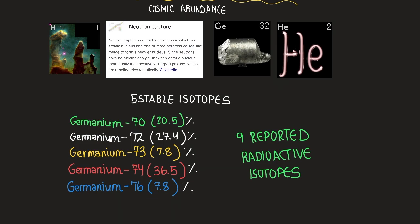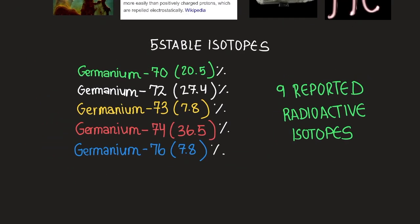The five stable isotopes of germanium occur in the following relative amounts. Germanium-70, 20.5%; germanium-72, 27.4%; germanium-73, 7.8%; germanium-74, 36.5%; and germanium-76, 7.8%. There are nine reported radioactive isotopes of germanium. These are the stable isotopes. An isotope is an element with the same number of protons, but different number of neutrons.